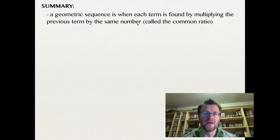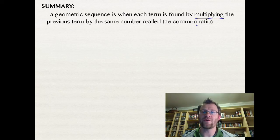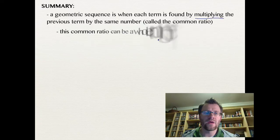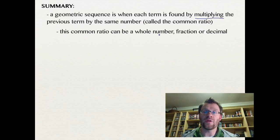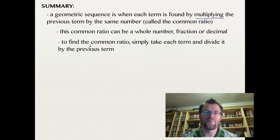So in summary, a geometric sequence is when each term is found by multiplying the previous term by the same number, and that's called the common ratio, that number that you're multiplying by. Remember with arithmetic sequences, we found it by adding the same number to the previous term, and this time it's by multiplying. This common ratio can be a whole number, it could be a fraction, or it could be a decimal. And to find the common ratio, you simply take each term and divide it by the previous term.